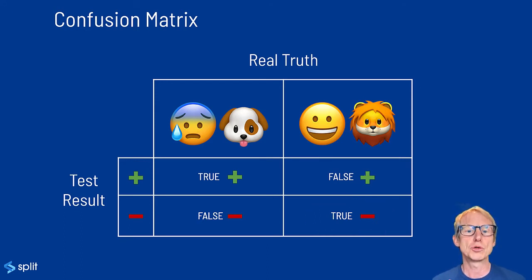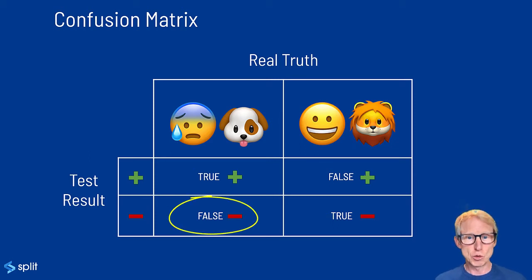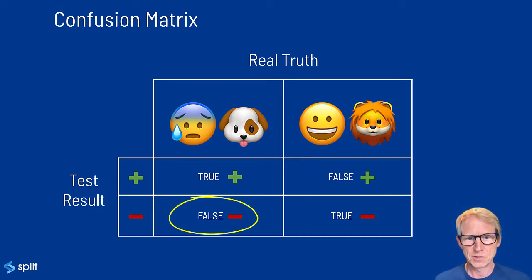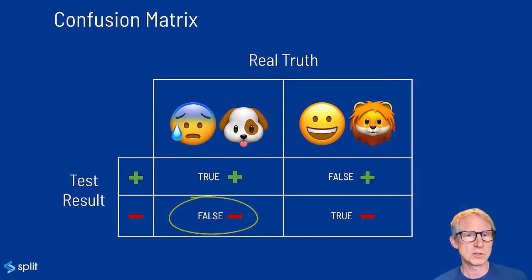Third, we have false negative: the truth is positive but the test predicts a negative. The person is sick, but the test inaccurately reports that they are not sick. That's a false negative, also known as a type two error in statistics.